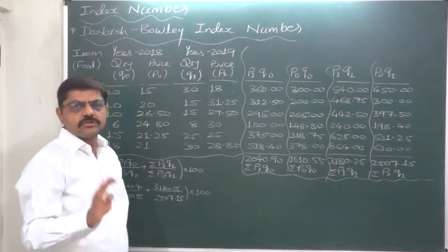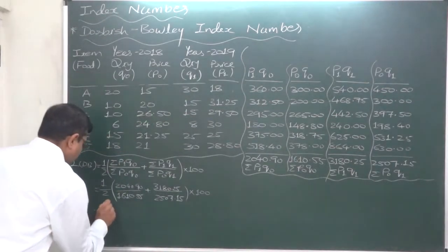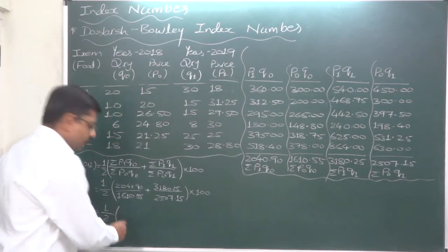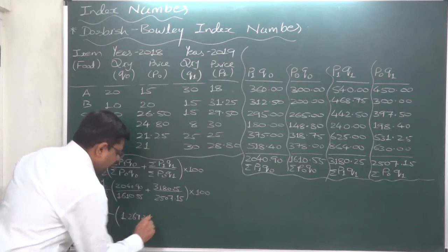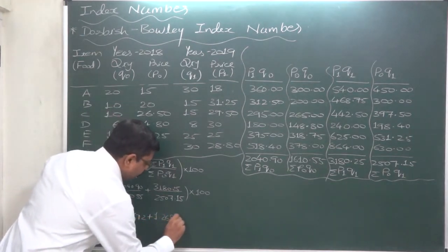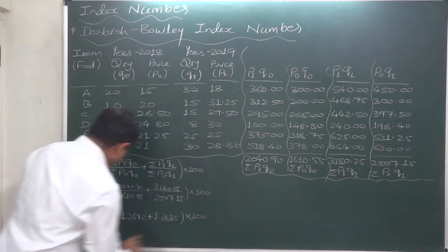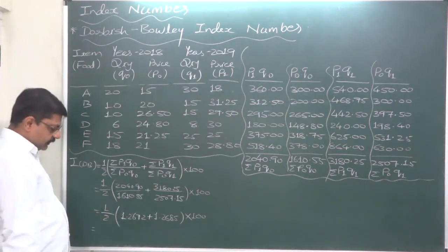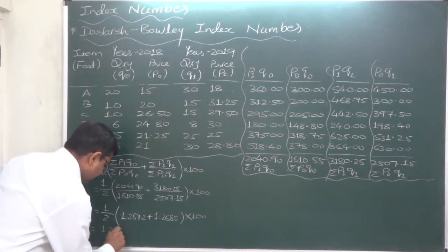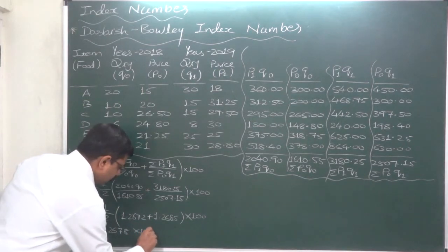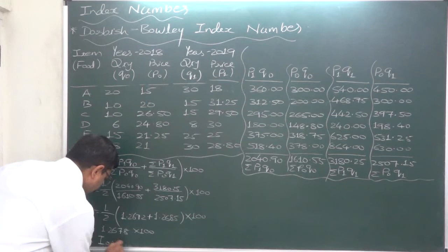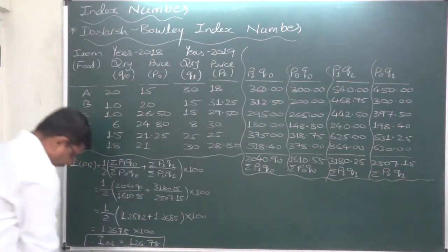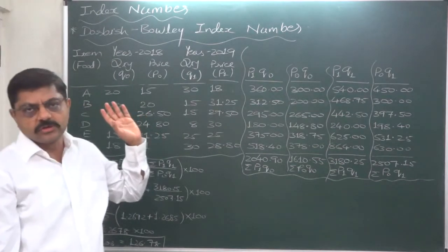If you are habituated to doing your working this way, in examination there will be very low chances of making errors. Simplifying the first ratio gives 1.2672, and similarly the second gives 1.2685, each multiplied by 100. On simplifying this bracket and this one, we find 1.2678 × 100. So ultimately the Dorbish and Bowley index number comes to 126.78. It is almost equivalent to Fisher's index number because I am using the same data for all index number calculations.